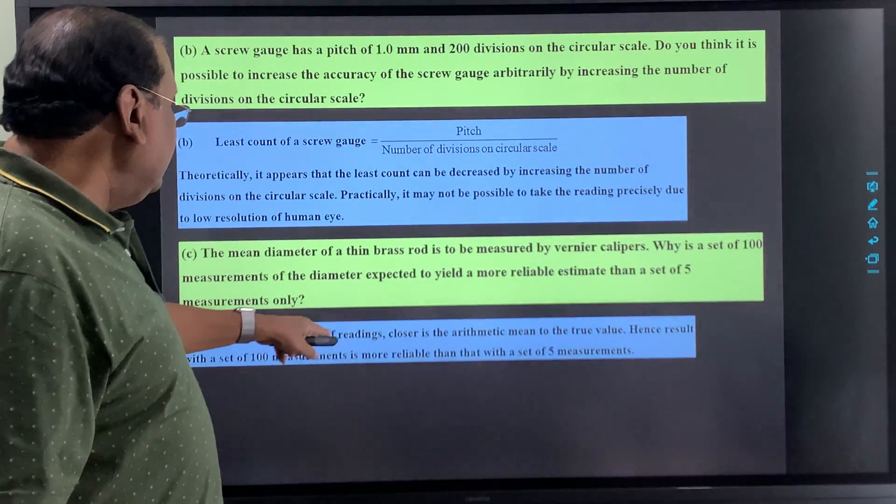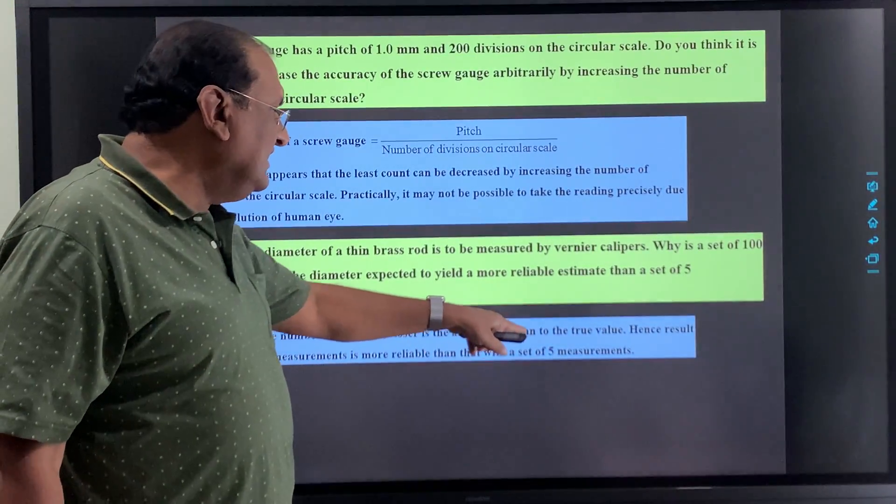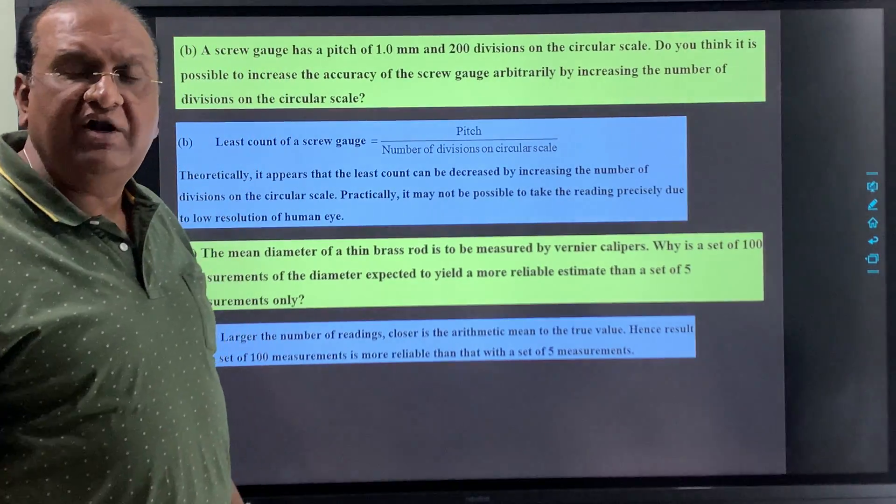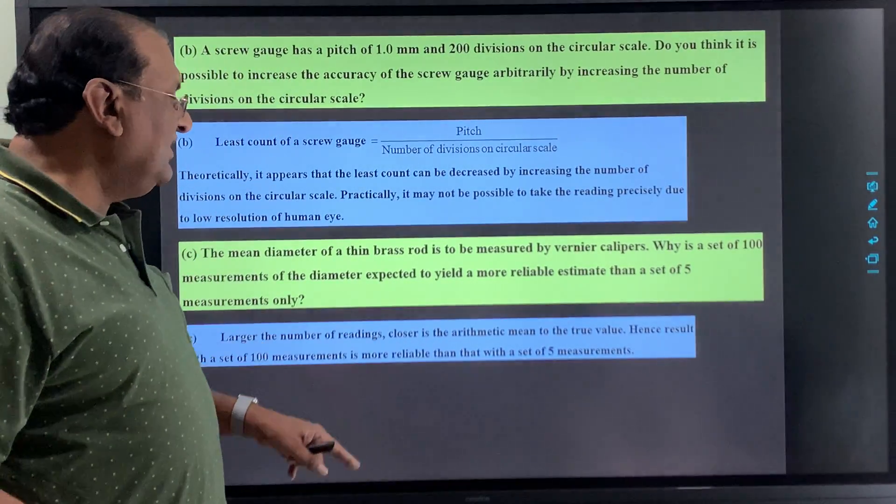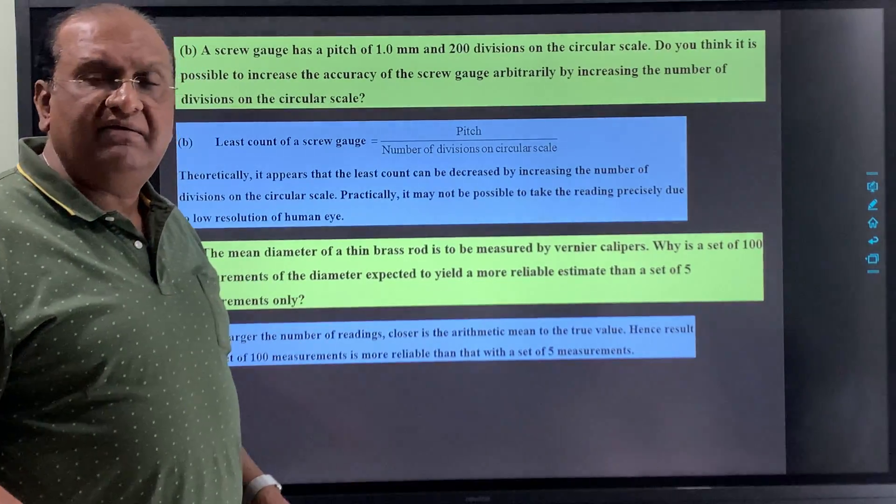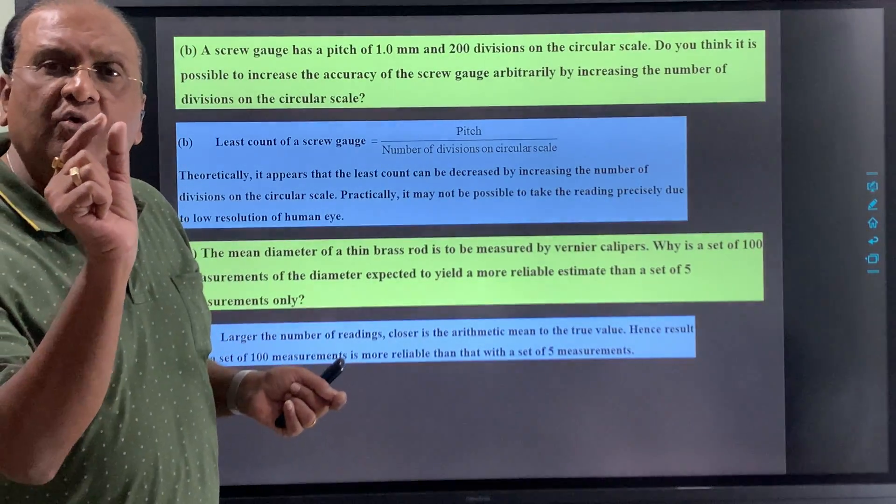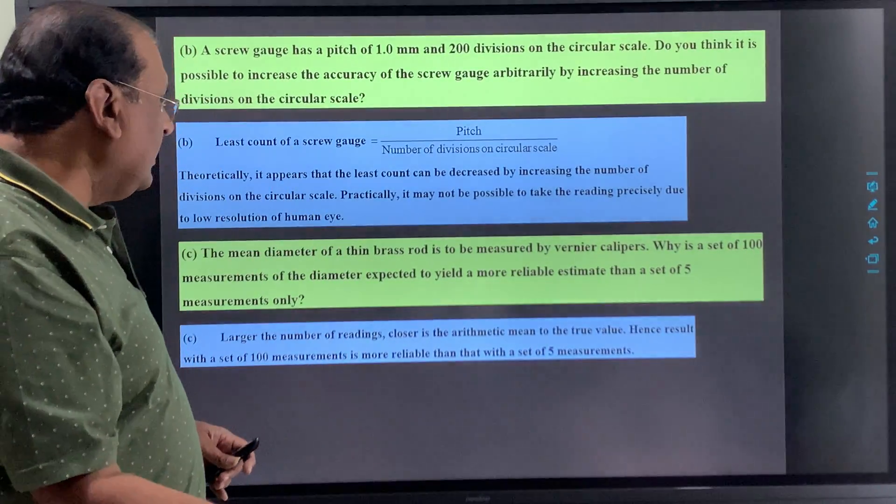So larger the number of readings, closer is the arithmetic mean to the true value. In mathematics, you study that the larger the number of readings, your arithmetic mean will be very close to the true value.